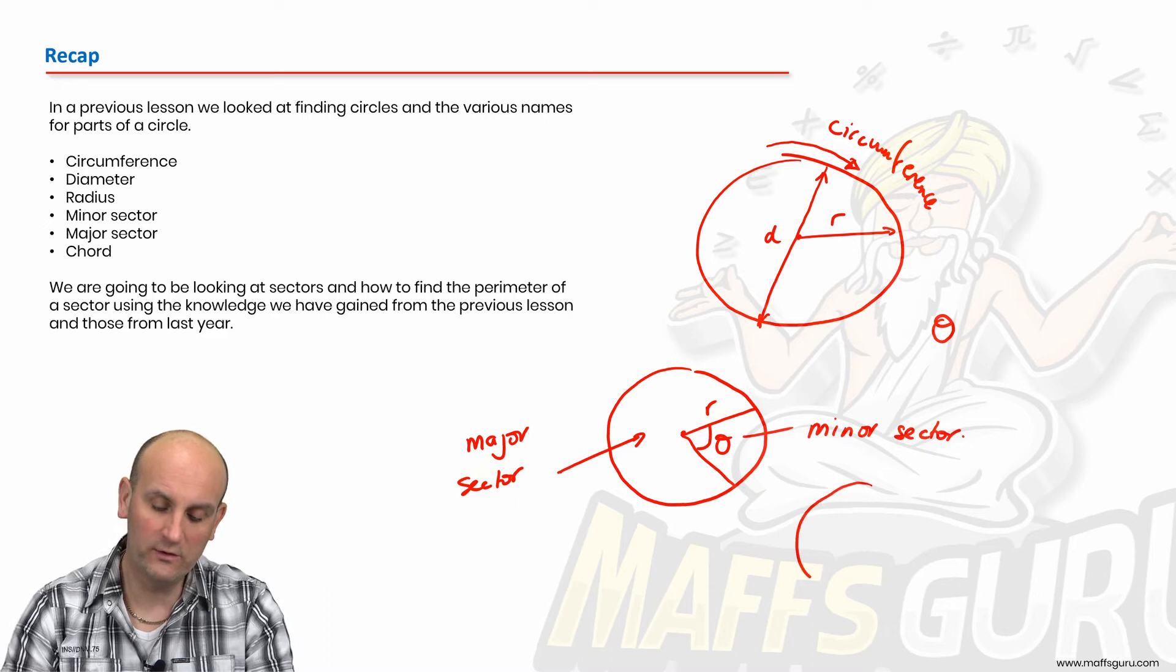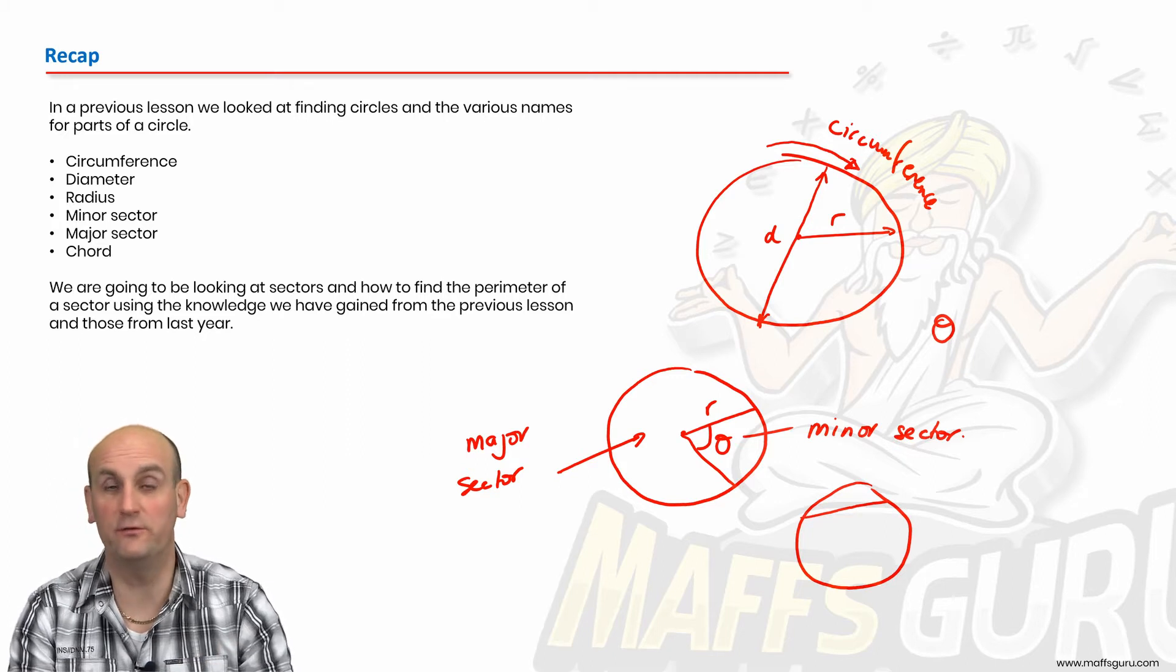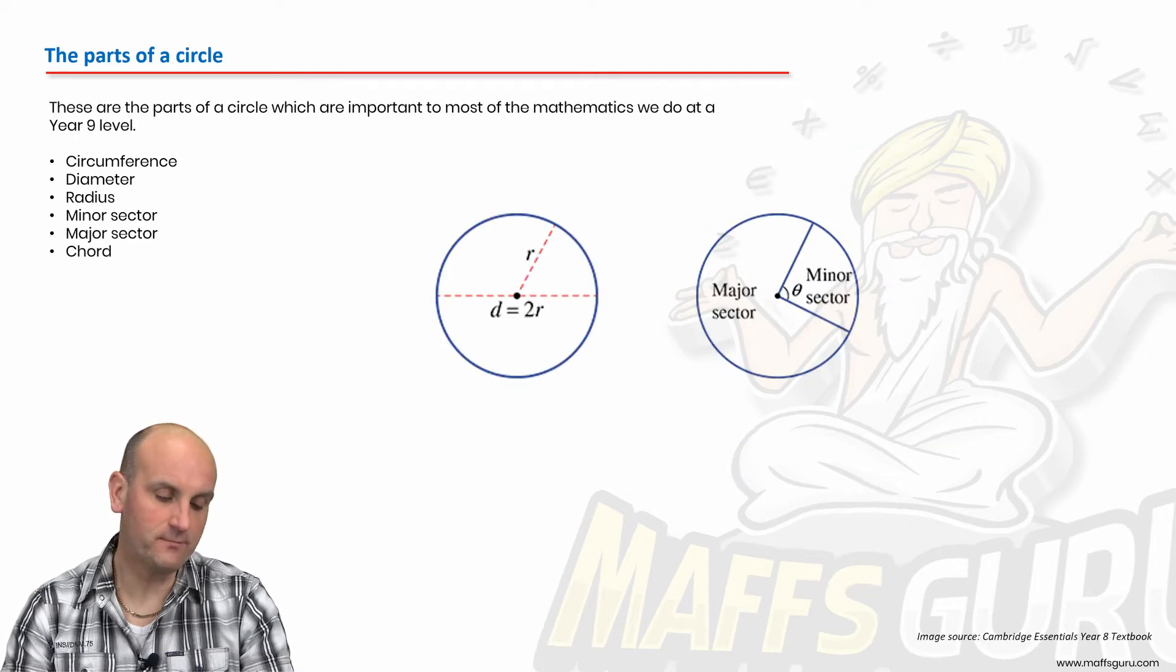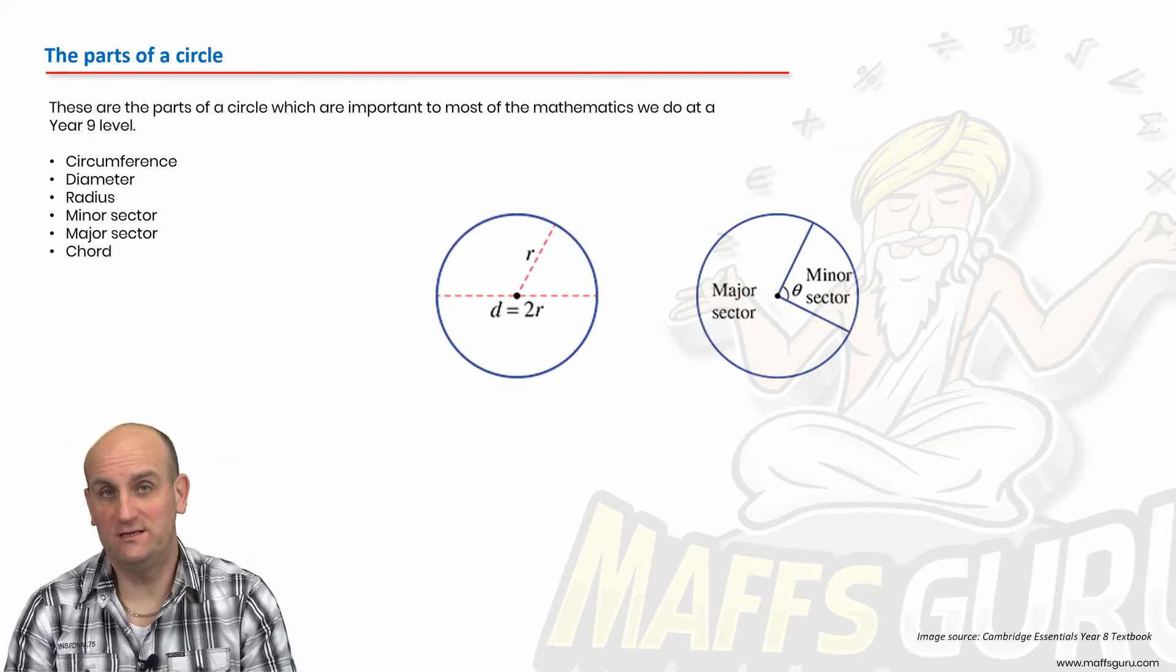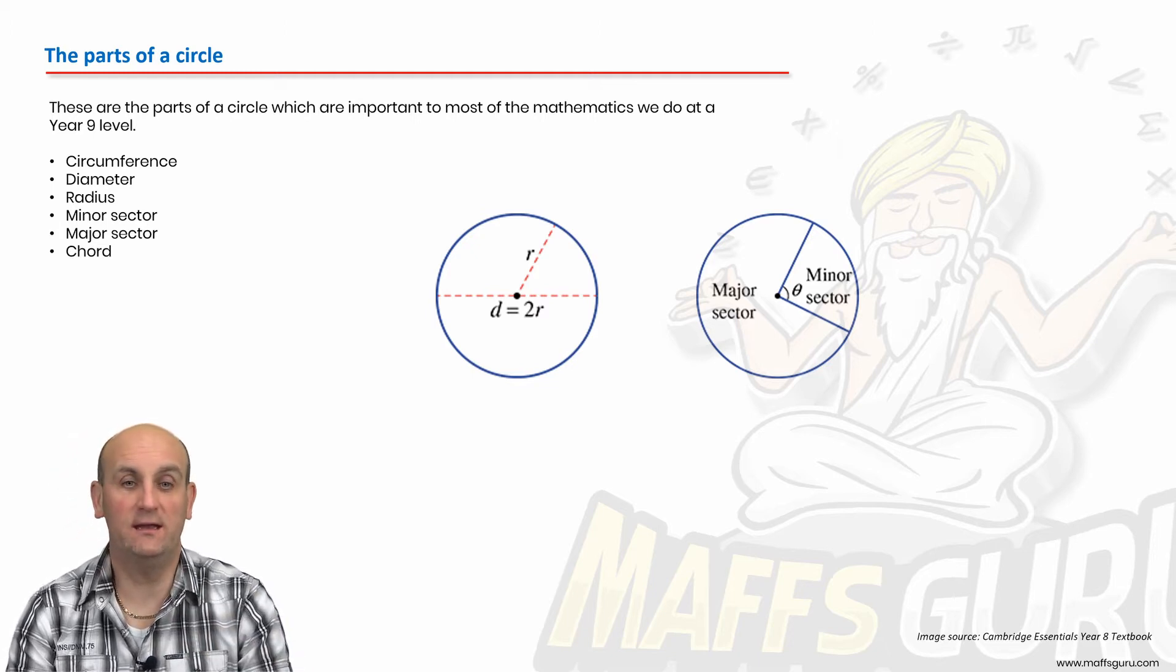And there's a chord. I thankfully don't play guitar or any musical instrument for a moment. And a chord is a line that joins from one side of a circle to another, not necessarily passing through my diameter. So that's a chord.